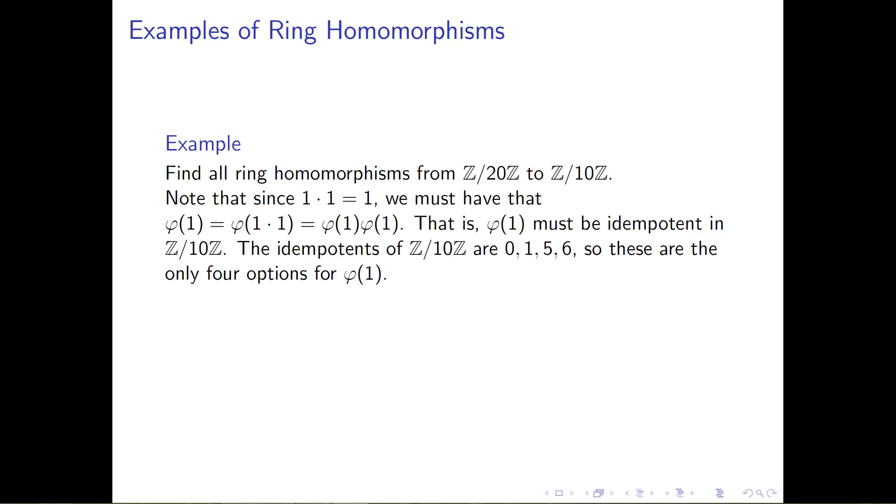It turns out that we actually get a ring homomorphism for every choice of these things. So there are exactly four ring homomorphisms from ℤ mod 20 to ℤ mod 10, one that corresponds to each of these choices for where we would send the element 1.